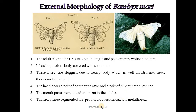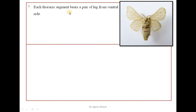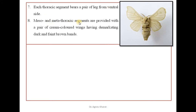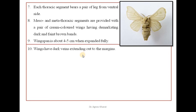The thorax is 3-segmented: prothorax, mesothorax and metathorax. Each thoracic segment bears a pair of legs from the ventral side. The meso- and metathoracic segments are provided with a pair of cream-coloured wings having demarcating dark and fanned brown marks. Wing span is about 4 to 5 cm when expanded fully, with dark veins extending out to the margin.